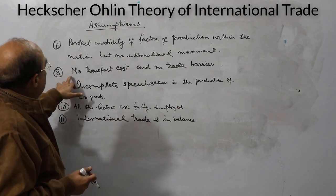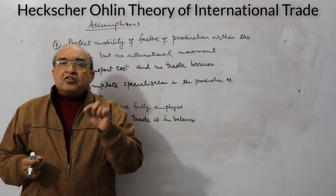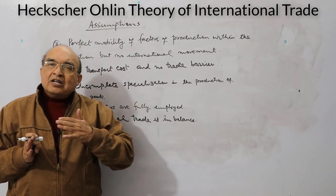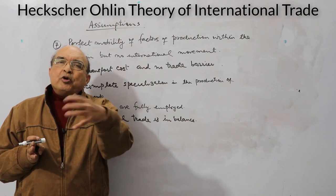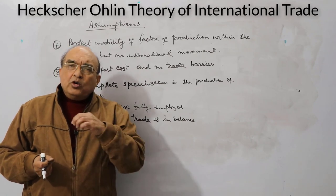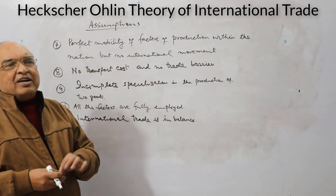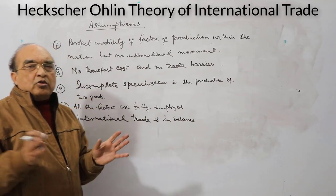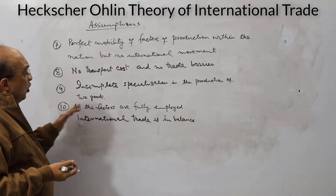There are no transport costs and no trade barriers. The only cost considered is production cost; there are no indirect taxes, tariffs, quotas, export duties, or other barriers. Allowing for transport costs and trade barriers would make the model unnecessarily complicated. All factors are also fully employed — the model assumes nations utilize their full endowments of labor and capital.